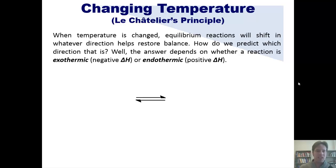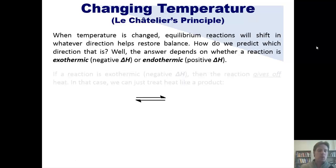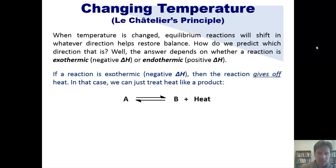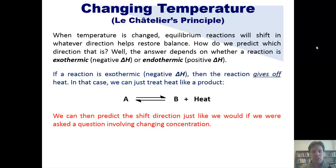Remember, exothermics have negative delta H's and endothermics have positive delta H's. If a reaction is exothermic — that is, it has a negative delta H — then the reaction gives off heat. In that case, we can treat heat just like a product. Then we can predict the shift just like we would if we were asked a question that involves changing concentrations.